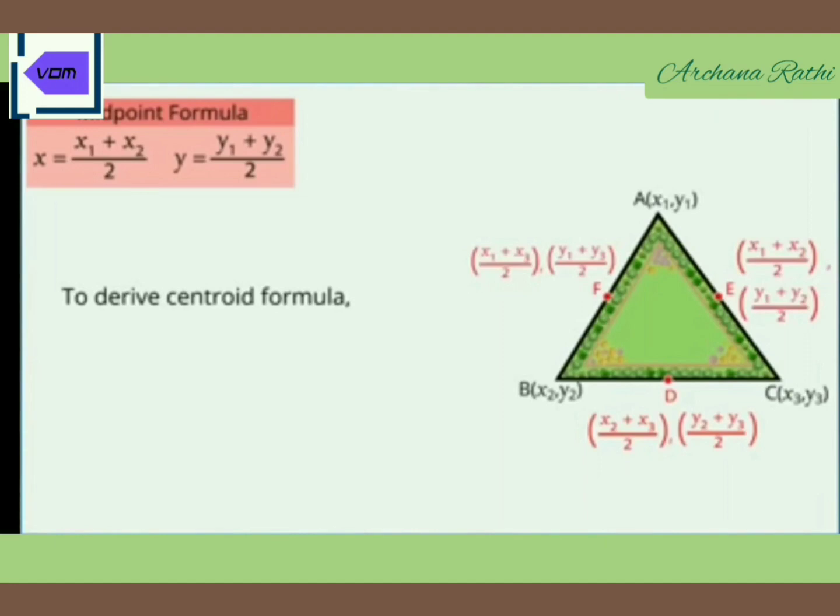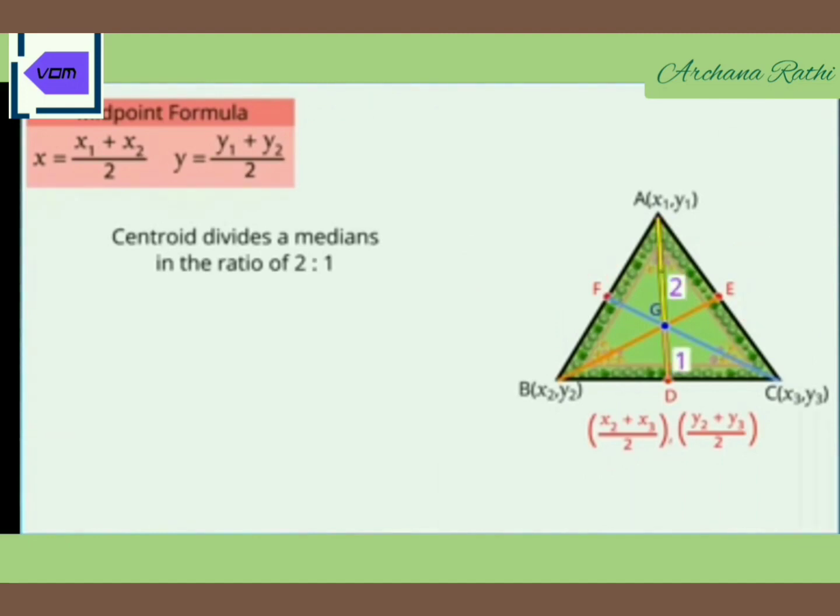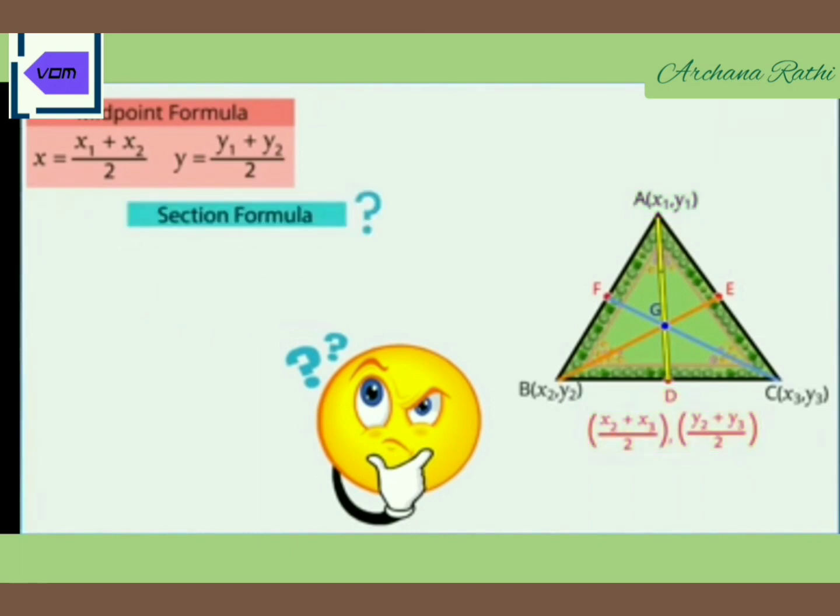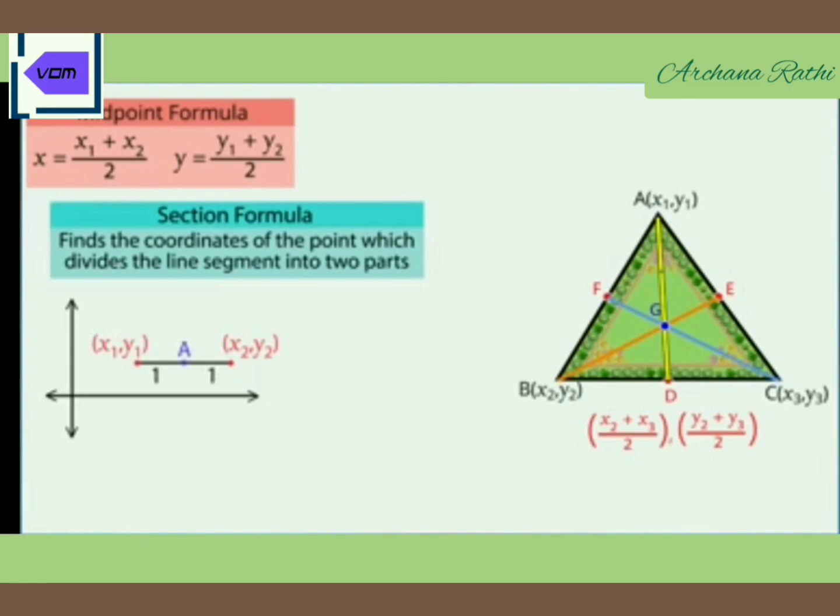Now to derive the centroid formula, you can use any of these midpoints, not necessarily D only. Here we are choosing D. We know that centroid divides the median in the ratio 2:1, so AG:GD is 2:1. Now we have coordinates of A and D, and also the ratio 2:1. Can we use the section formula to find the coordinate of G? Yes, we are going to use the section formula to find the coordinates of the point which divides the line segment into two parts.